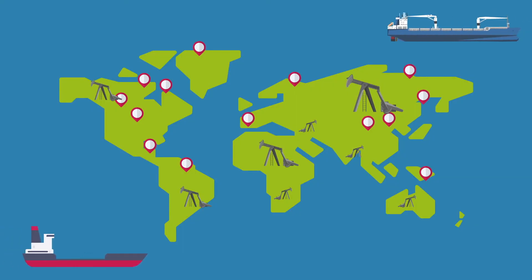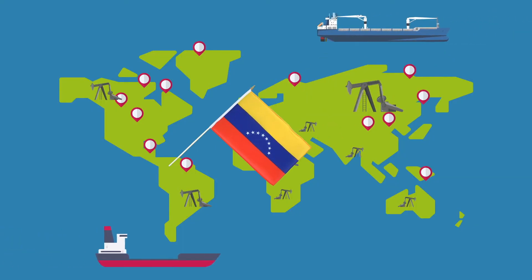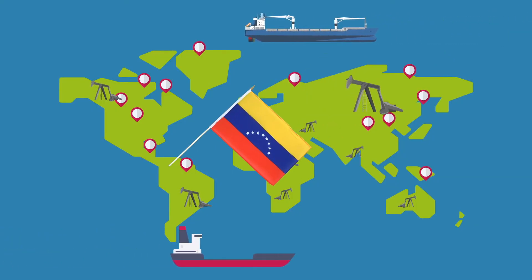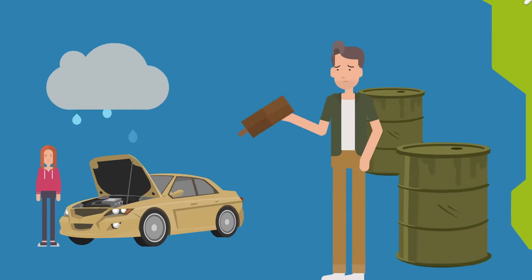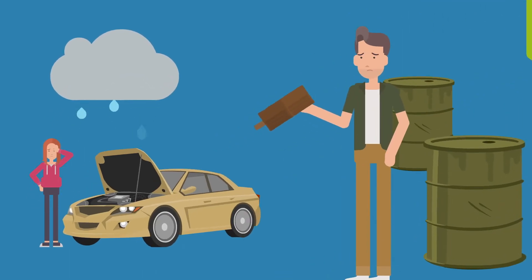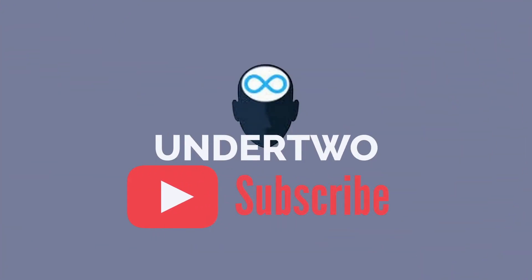Did you know that Venezuela has more oil than Saudi Arabia, yet is still considered one of the poorest countries in the world? If you want to know why, please subscribe to the channel. Thank you for watching.